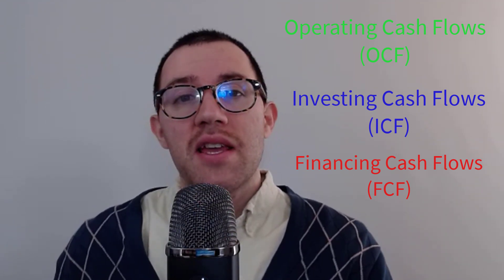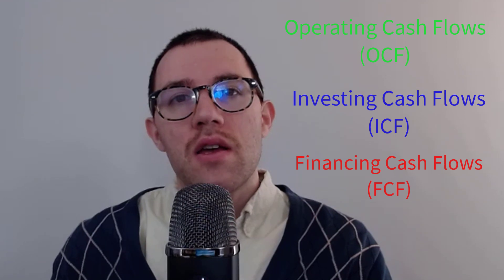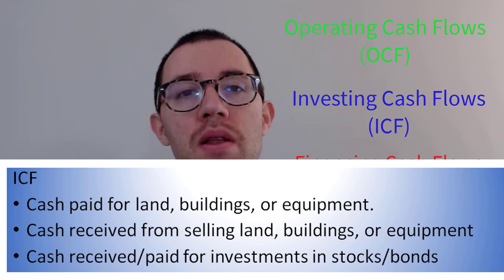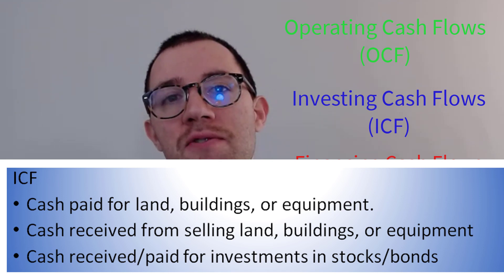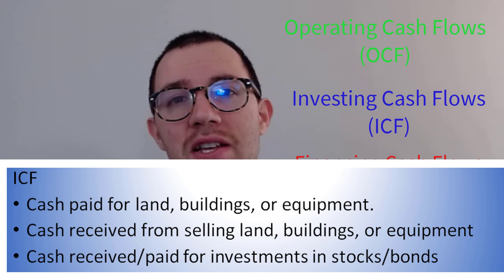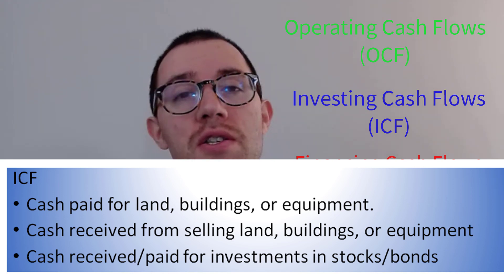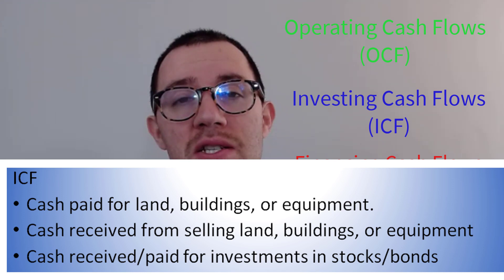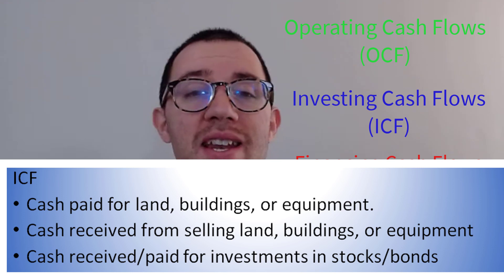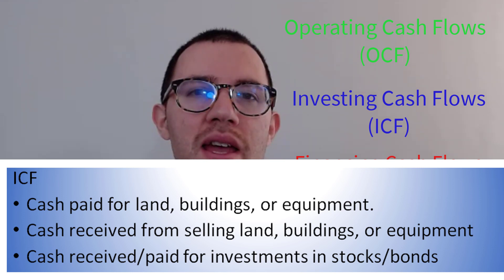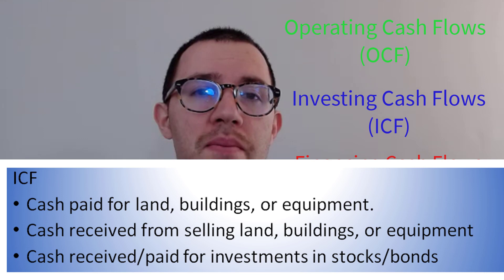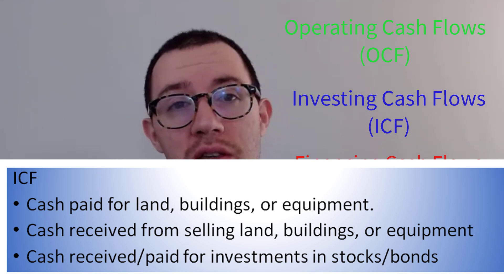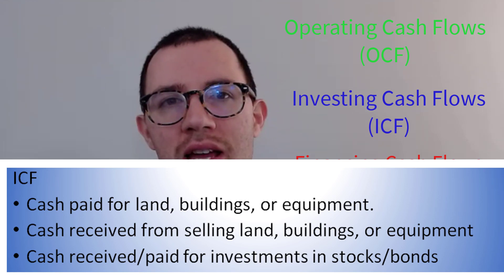The second section is the investing cash flow section. Whenever you buy a piece of property, plant, or equipment, that is a negative investing cash flow. Conversely, if you sell a piece of land or equipment, that's a positive investing cash flow. In addition, if you have extra money and want to buy some securities, that's a negative investing cash flow. When you sell those securities, that's a positive investing cash flow.